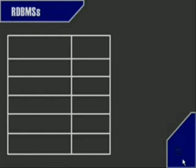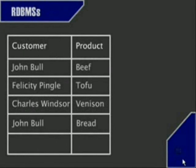Let's think for a moment that we own a shop, and we need to register the customers and the products that they buy. For that, we draw a table with two columns. In the first one, we put the customers, and in the second one, the products. A few customers came and made their shopping, but the first one comes back and buys again. Now we have to register him again, repeating his name, which is a problem when the amount of data is bigger, because we are wasting space in our hard drive by adding the same name over and over again.